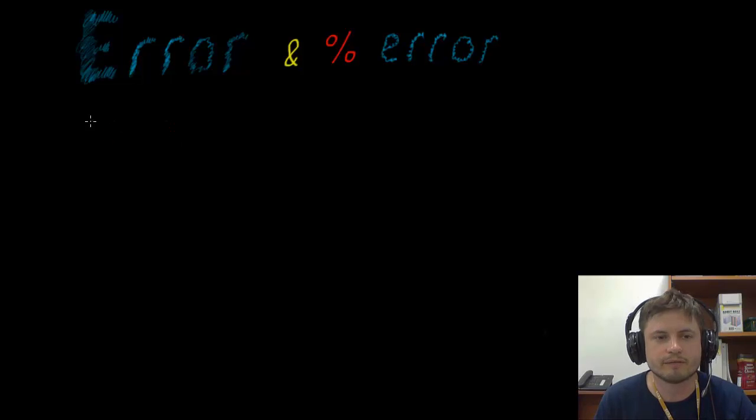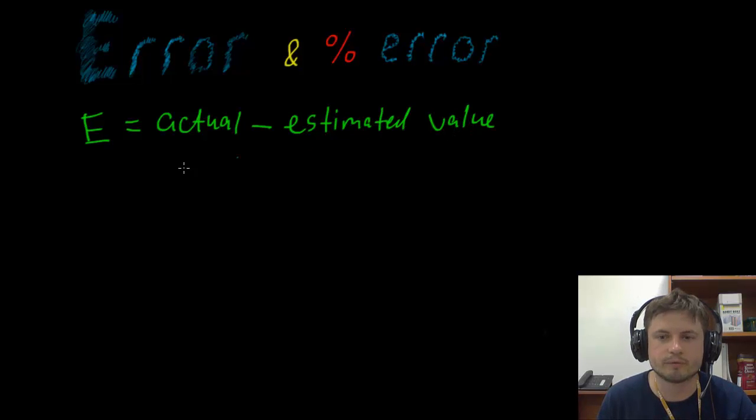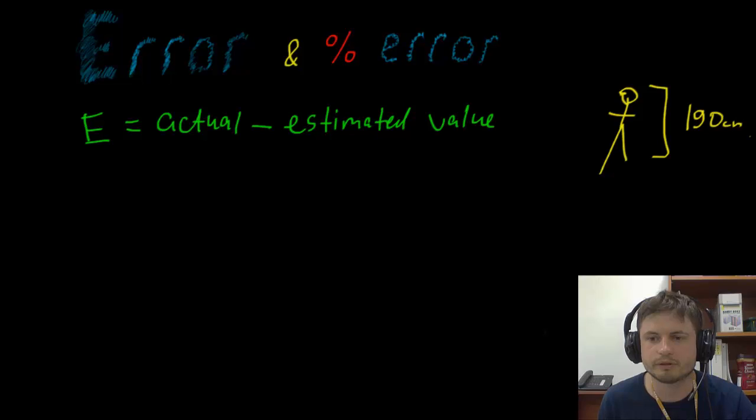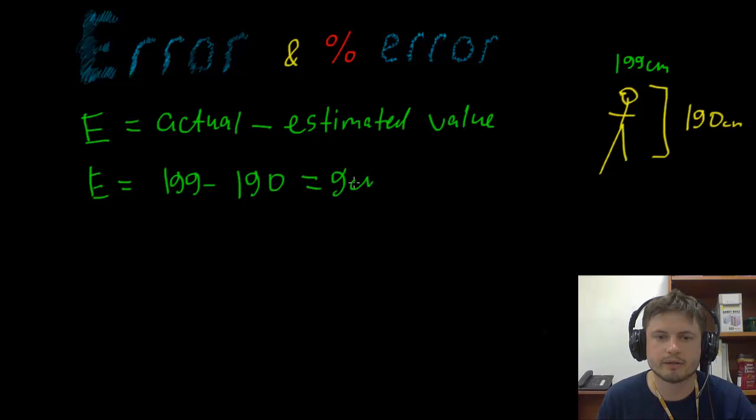So in your book, you actually have two different types of errors. One is just called errors and it's expressed as the letter E. And this is where you take your actual value and you subtract it from your estimation or estimated value. And so if we were to look at an example of a person's height, we have this person right here. We kind of think that this person is about maybe 190 centimeters. But it turns out that this person is actually 199 centimeters. This is his or her actual height. In this case, your error is 199 minus 190, and that's 9 centimeter error.